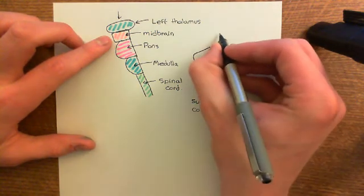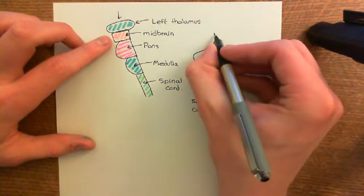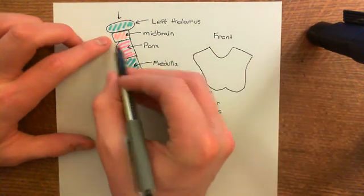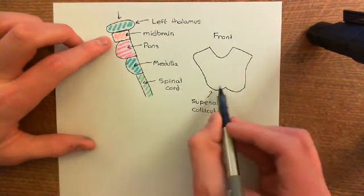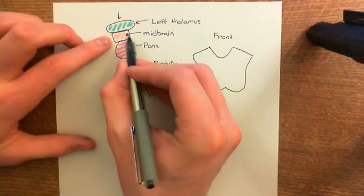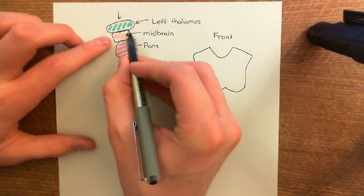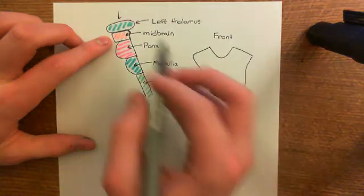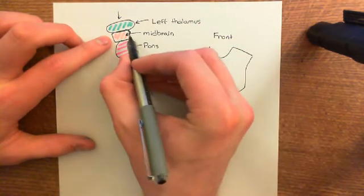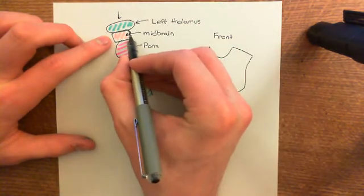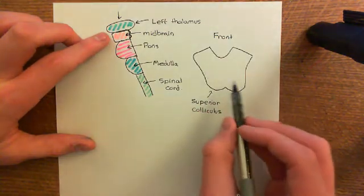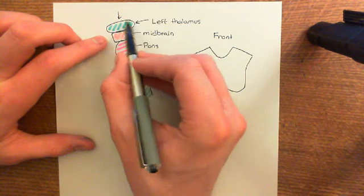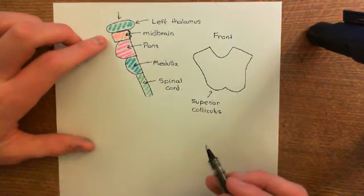The first thing I should have said is which side is the front and which side is the back. This is the front, and this is the back, so you'd have the colliculi coming off the back here. Here's the superior colliculus, and in fact you also have inferior colliculi as well, but we're not seeing those at the moment because we're taking a cross-section at the top so that we can show the thalami sitting on top of it.